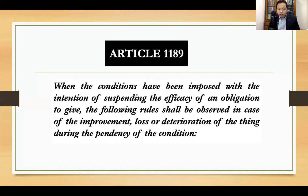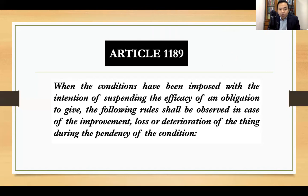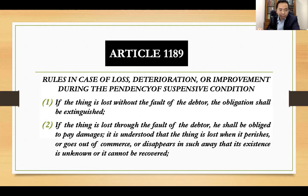We continue with Article 1189. Article 1189 talks about effects on loss or deterioration of the object pending the fulfillment of a suspensive condition. When the conditions have been imposed with intention of suspending the efficacy of an obligation to give, the following rules shall be observed in case of improvement, loss, or deterioration of the thing during dependency of the condition. If the thing is lost without the fault of the debtor, then the obligation shall be extinguished.